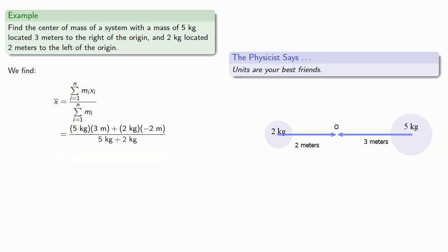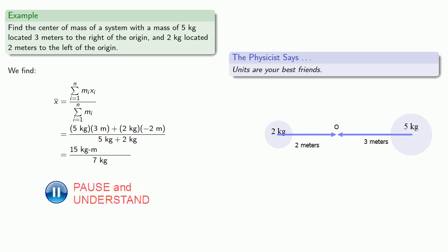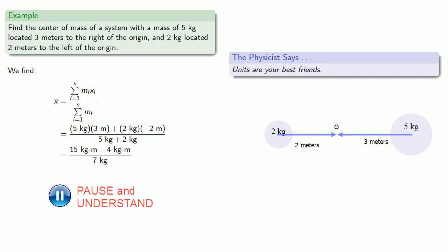The masses themselves are 5 kilograms and 2 kilograms. Units are just like algebraic variables — so the denominator is like 5x + 2x, or 7x, giving us 7 kilograms. In the numerator, 5 kg × 3 m gives 15 kilogram-meters, and 2 kg × (−2 m) gives −4 kilogram-meters. Since the units match, we combine like terms to get 11 kilogram-meters.